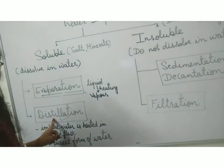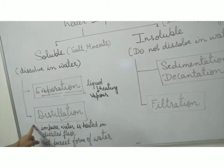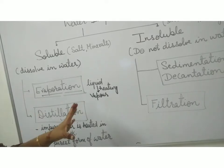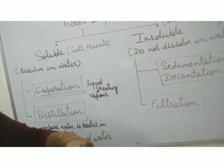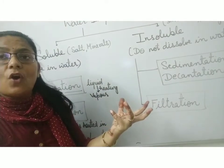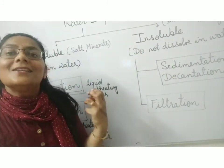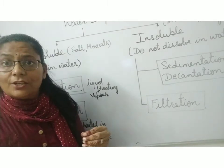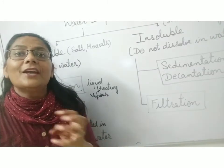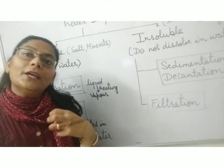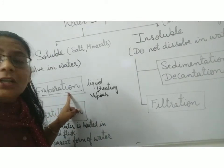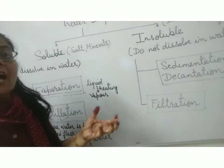We use the process of distillation to recover the liquid. In distillation, we change a liquid into its vapor, and then the vapors are condensed to get the pure form of liquid. That pure form of liquid is called distilled water, and this process is called distillation. We boil the water, convert it into water vapors, and those vapors are again condensed to get the purest form. The advantage of distillation over evaporation is that in evaporation we do not get the liquid back, but in distillation we do get it back.